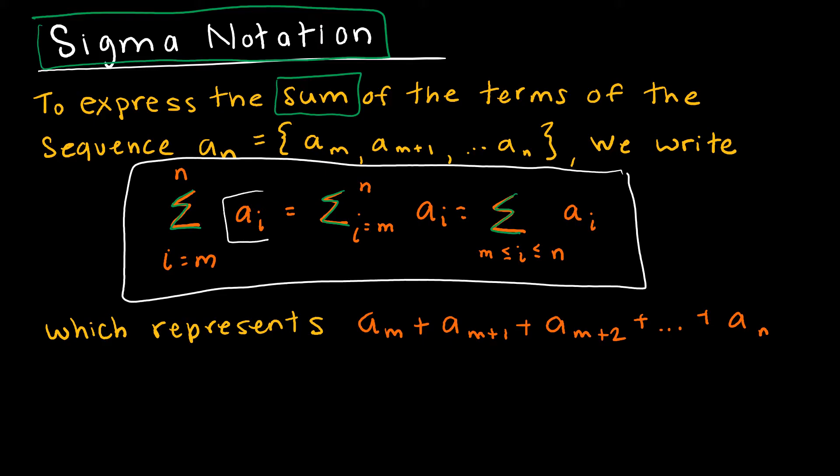This guy right here, if you'll notice, is the same for all three expressions and it just says a sub i, and i is just the index. So here if I'm looking at a sub m, a sub m plus 1, all the way up to a sub n,